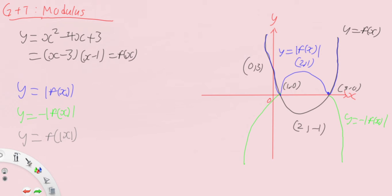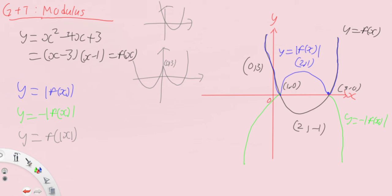Originally we had the graph of y equals f(x). Now drawing a separate axis to keep things clear, the graph will look something like this — going up to the point (0, 3). All negative values of x will get the same y-value as the corresponding positive x-values. So you label the points: (0, 3) here, (1, 0), (3, 0), and the turning point at (2, -1).